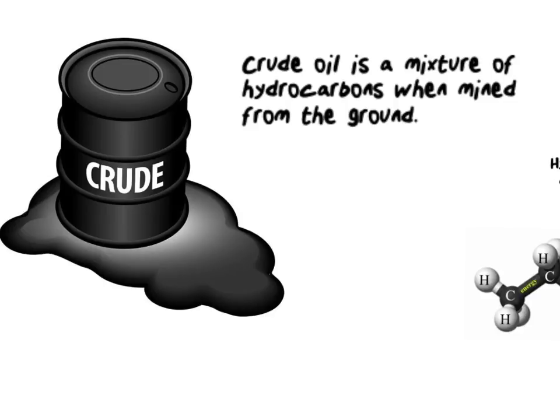Now crude oil is a mixture of a compound called hydrocarbons. Mixtures are where you have two or more different compounds that are not chemically joined together. Because they are not chemically joined together, that means we can easily separate them, and we'll talk about how we separate our crude oil in a second.